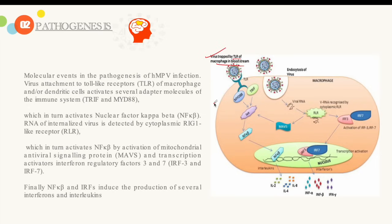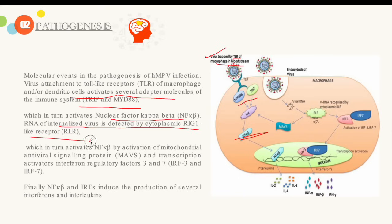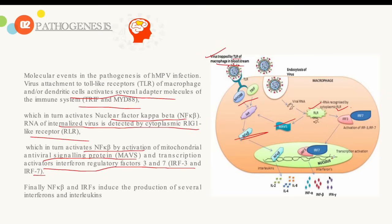Regarding pathogenesis, the virus is detected by toll-like receptors on macrophages and dendritic cells, activating adapter molecules TRIF and MyD88. These activate Nuclear Factor Kappa Beta (NF-κB). The RNA virus is also detected by cytoplasmic RIG-I-like receptors (RLR), which further activate NF-κB through the Mitochondrial Antiviral Signaling protein (MAVS) and transcription activators Interferon Regulatory Factors IRF3 and IRF7. Together, NF-κB and IRFs induce production of interferons (IFN-α, IFN-β, IFN-γ) and interleukins IL-2, IL-4, and IL-8.